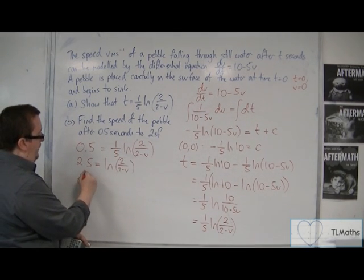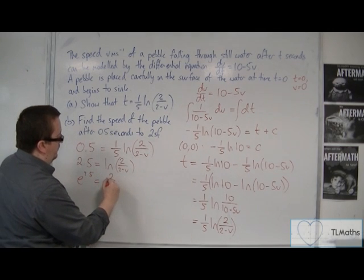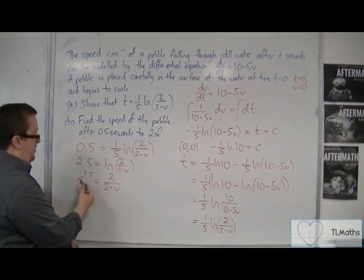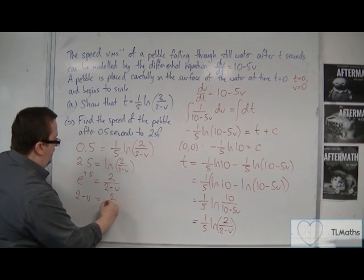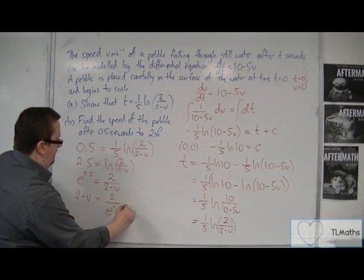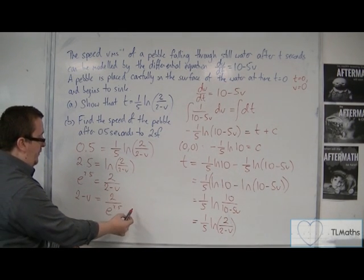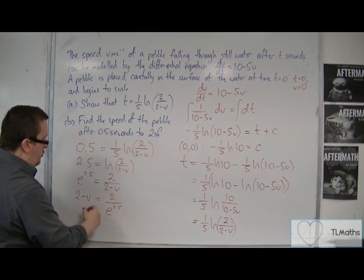Then e both sides. Then we want to multiply both sides by the 2 minus v and divide both sides by e to the 2.5. And then we can add v to both sides and subtract that fraction from both sides.